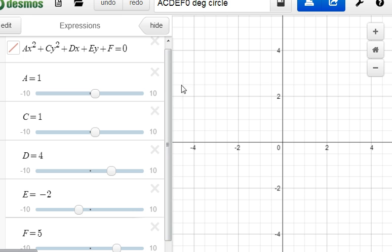So let's take a look at this formula, then. This general formula, ax² + cy² + dx + ey + f. Let's take a look at what's going on when a is 1, c is 1, d is 4, e is -2, and f is 5.